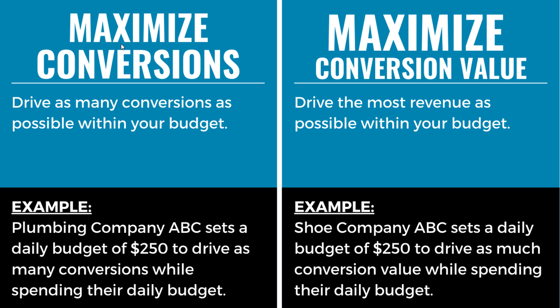That brings us to Maximize Conversions and Maximize Conversion Value. With Maximize Conversions, you're just trying to drive as many conversions as possible within your budget. Plumbing company ABC sets a daily budget of $250 and wants to drive as many conversions as possible while spending their daily budget. With Target CPA, you can actually limit how much you'll spend because Google Ads tries to drive conversions at the number you set — sometimes they won't even spend your full daily budget. With Maximize Conversions, you say: spend my budget and drive as many conversions as possible.